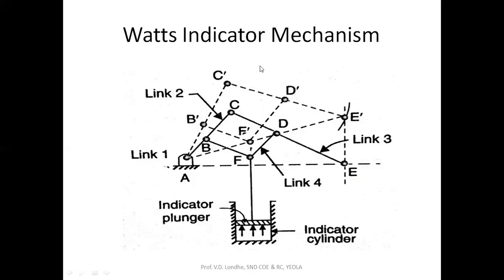The main aim of the Watt's indicator mechanism is to measure the pressure inside the cylinder — it may be air or gas pressure. Link CD has an extension at point E, where there is a pressure gauge or pressure scale measurement. As the pressure inside the cylinder increases, it moves the piston or plunger upward, and this motion is transferred to links two and three, and the pressure is read directly on the scale. There is no crank here, but there are two levers, so this mechanism is also called the double lever mechanism. It has four turning pairs under the category of lower pairs. This mechanism was developed by the scientist Watt, and so it is named the Watt's indicator mechanism.